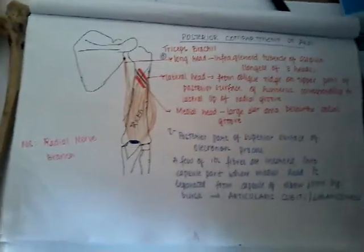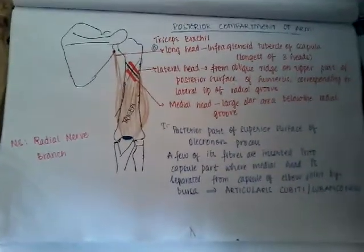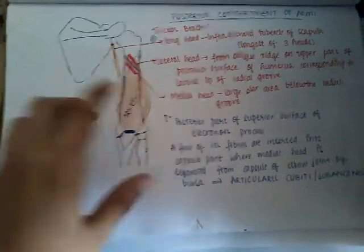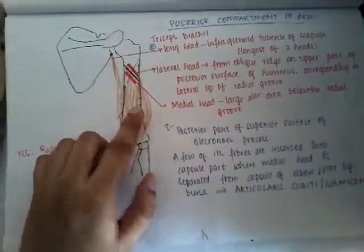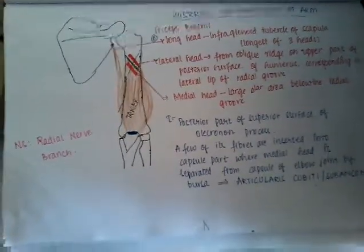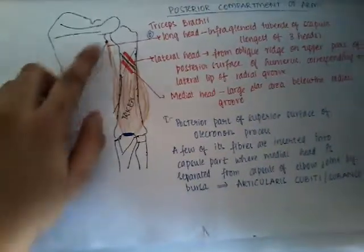Hello friends, let us learn a new topic today: the posterior compartment of the arm. The posterior compartment of the arm consists of only one muscle, which is the triceps muscle. The triceps muscle has three heads.